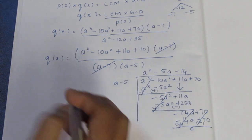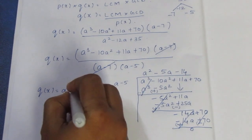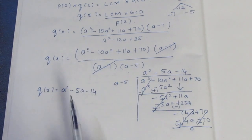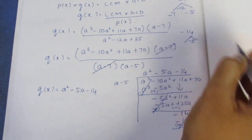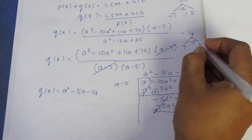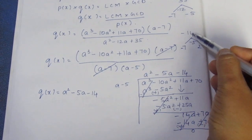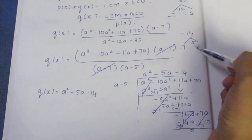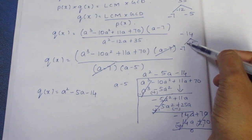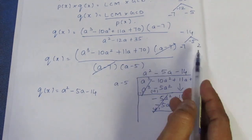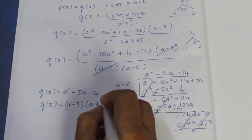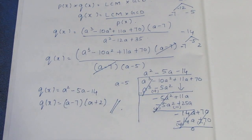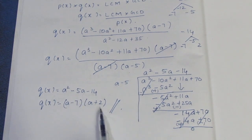Quotient is the answer. Q of X is equal to a² minus 5a minus 14. This is factored using the splitting the middle term method. Splitting 14: minus 14 gives minus 5 when combined using 7 and 2 by subtraction. So Q of X is equal to a minus 7 into a plus 2. This is the final answer.